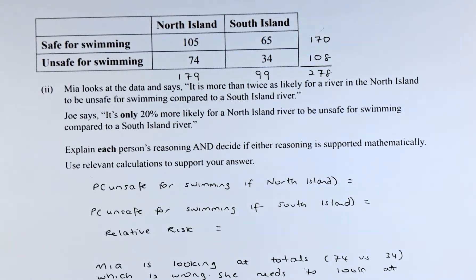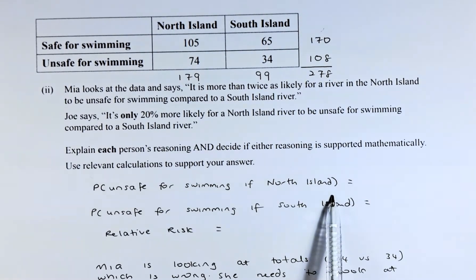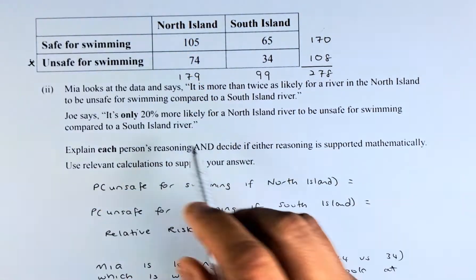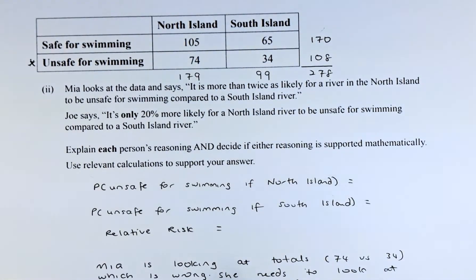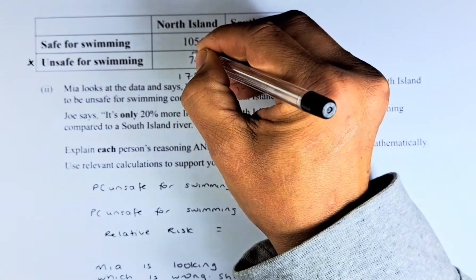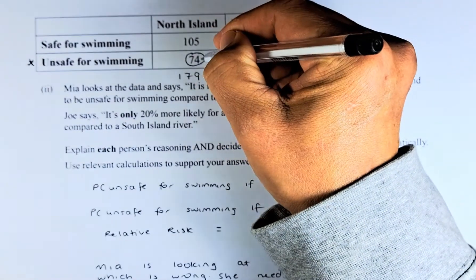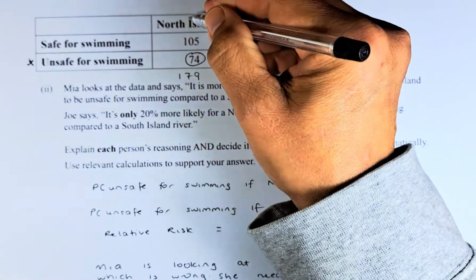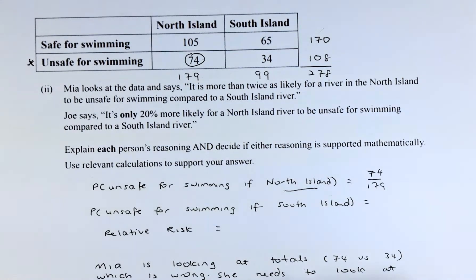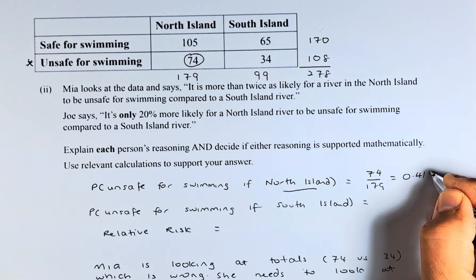We need to calculate the probability that a river is unsafe for swimming given it is a North Island river. Looking at the unsafe row for North Island, it is 74 out of 179, because there are 74 unsafe North Island rivers out of 179 total North Island rivers. Since we are comparing proportions, we convert to decimal: 0.4134.